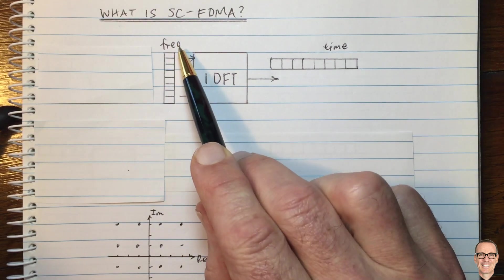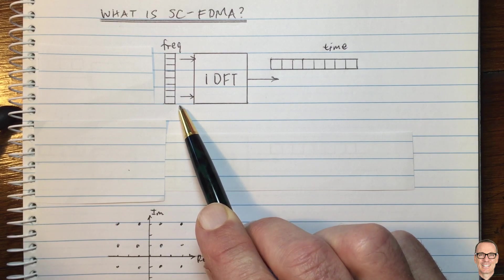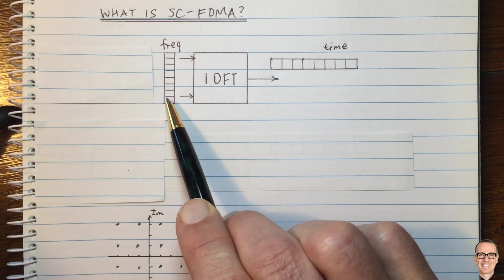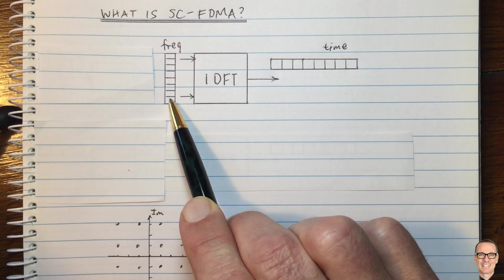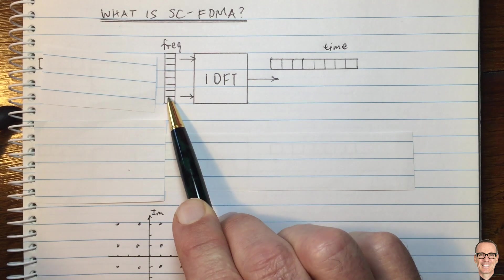And this has a lot of advantages because it means that equalization is easy to do. Each subchannel is independent of the others. And you simply need to invert the gain in that subchannel at the receiver to recover your original data.